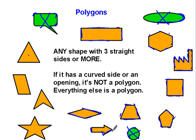This is all straight sides. Even though it angles off like that, it's still considered to be a straight side. That is a polygon.